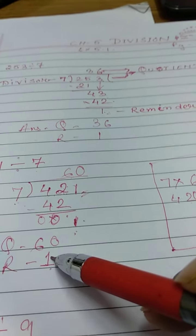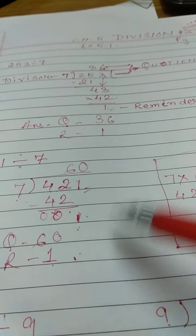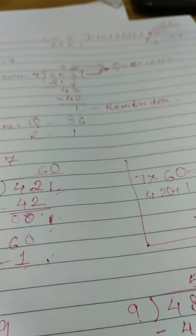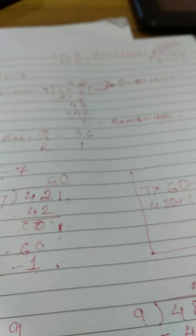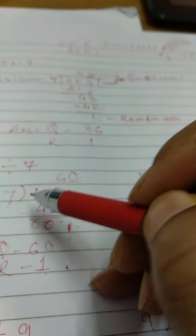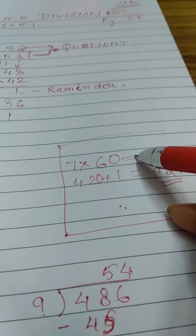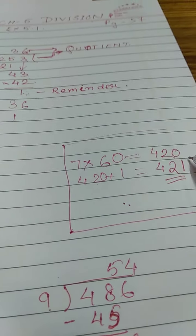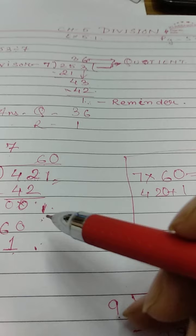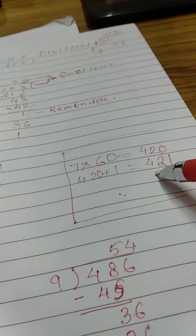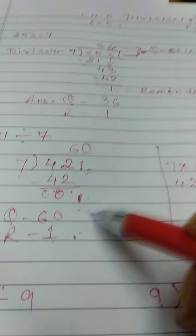Now while doing this sum, I will teach you one more thing - how to check if your sum is correct or not. For that, this is divisor. I will multiply this with quotient. So 7 multiplied by 60, I am getting 420. Now here is the remainder 1. So I will add 420 plus 1. I am getting 421. That means your answer is correct.